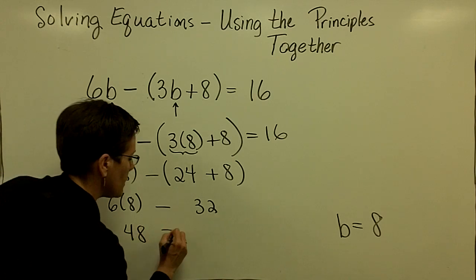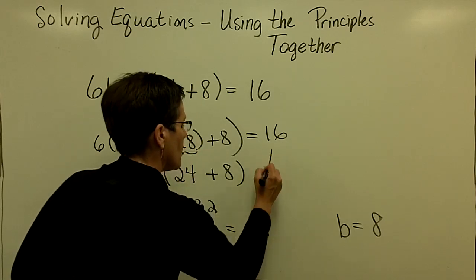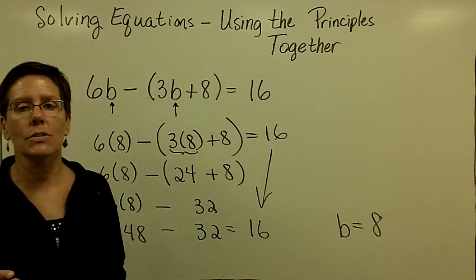6 times 8 is 48 minus 32. 48 minus 32 appears to be 16. And lo and behold, that is what I wanted it to be equal to.